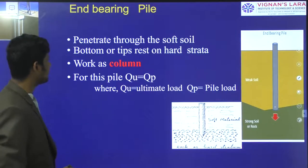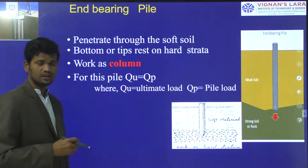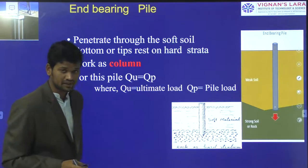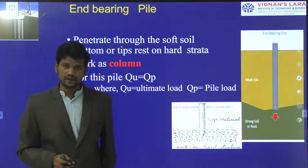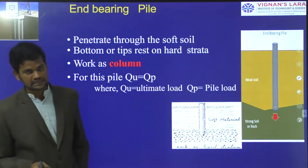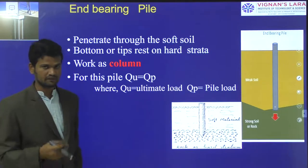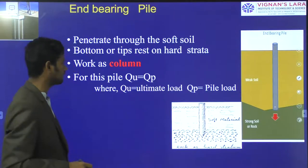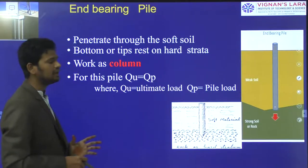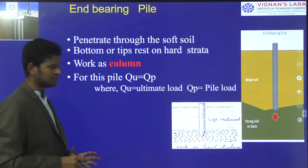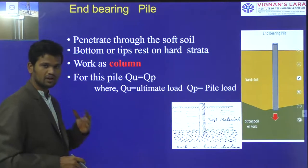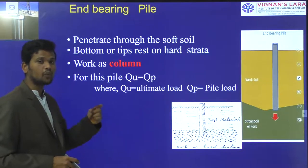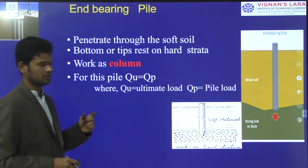Next, based on function and type of requirement, we are having end bearing pile, friction pile, compaction pile, tension pile, uplift pile, fender pile, batter pile, and sheet pile. We will discuss each individual pile. End bearing pile is the type of pile in which the load is transferred through the end or point of the pile.